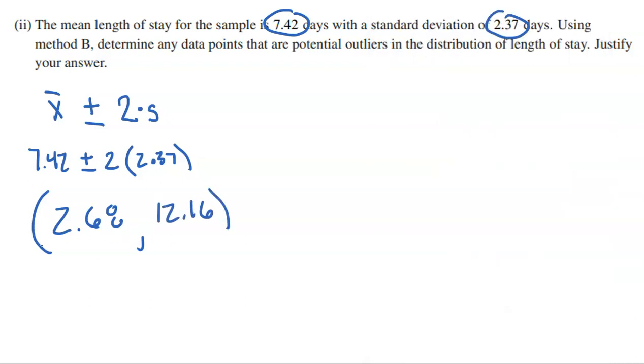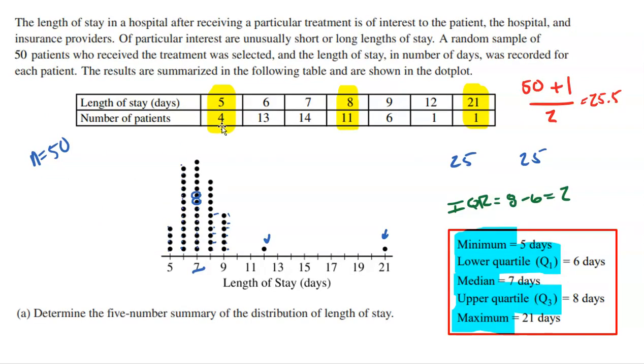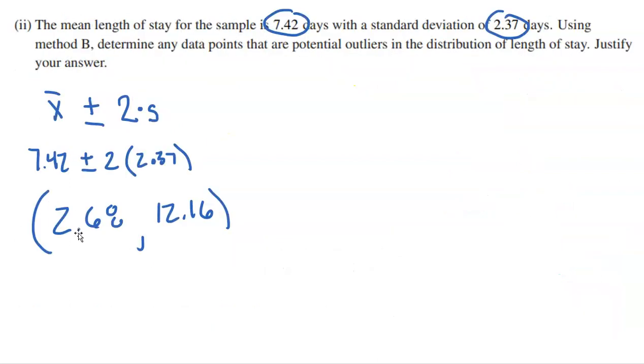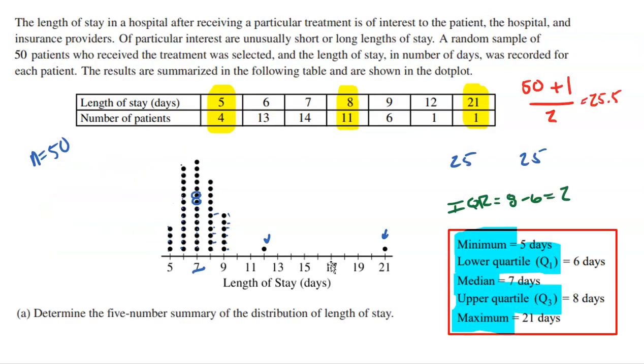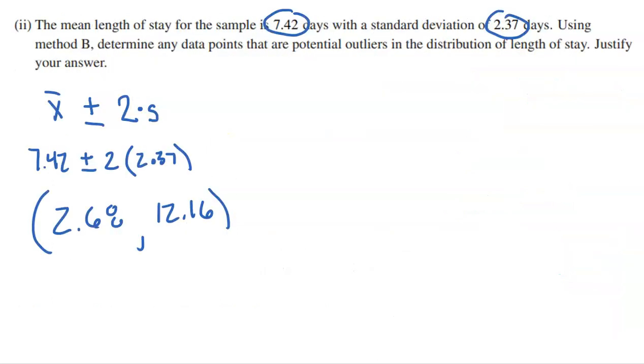What this means is that any value from 2.68 days to 12.16 days is not an outlier. Anything outside of those values is an outlier. Our lowest value was staying five days, so clearly no value was below 2.68. Anything above 12.16 would be an outlier. If we look at our data, we actually only have one value that's above 12.16. We did have one person stay 12 days, but that is not above 12.16. In this scenario, we only have one upper outlier and that is the person that stayed 21 days.